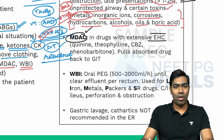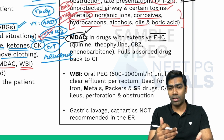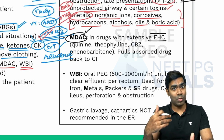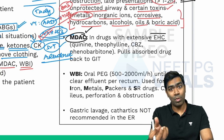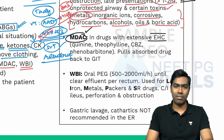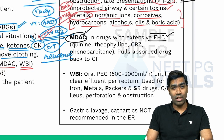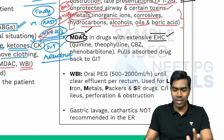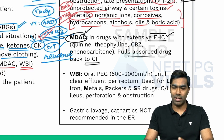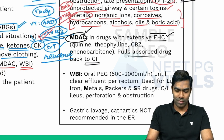The rationale is that certain drugs undergo extensive enterohepatic circulation. If you reduce the concentration of that drug in the gut, whatever drug has already been absorbed into the portal system can be pulled back into the GIT, trapped, and eliminated via the activated charcoal. So multi-dose activated charcoal should be tried only for drugs with extensive enterohepatic circulation.